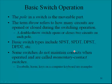Basic switch operation, and this is just a review of what we just looked at. The pole in the switch is the movable part. The term throw refers to how many circuits are opened or closed during the switching operation. A double throw switch opens or closes two circuits on each pole.